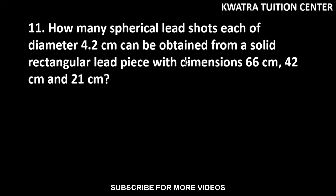Let's start with question number 11. It says: how many spherical lead shots, each of diameter 4.2 cm, can be obtained from a solid rectangular lead piece with dimensions 66 cm, 42 cm, and 21 cm?